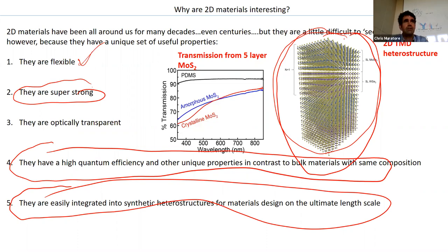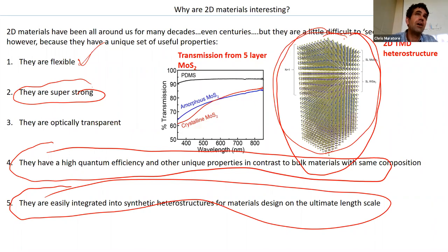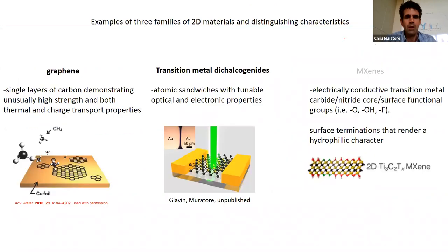There are semiconducting, insulating, and conductive 2D materials. You can build entire devices from 2D materials where every aspect of the material exhibits strength, flexibility, and transparency. There are a lot of applications for these flexible electronic materials.